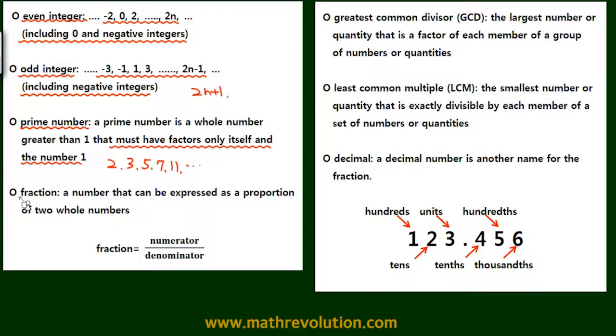Now a fraction is a number that can be expressed as a proportion of two whole numbers. So it's a numerator over a denominator. The greatest common divisor is the biggest common factor, and the least common multiple is the smallest common multiple of two numbers or three numbers.